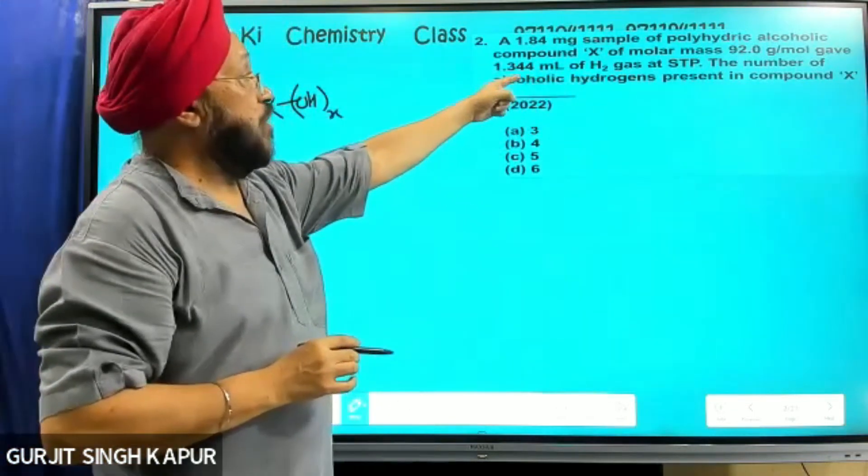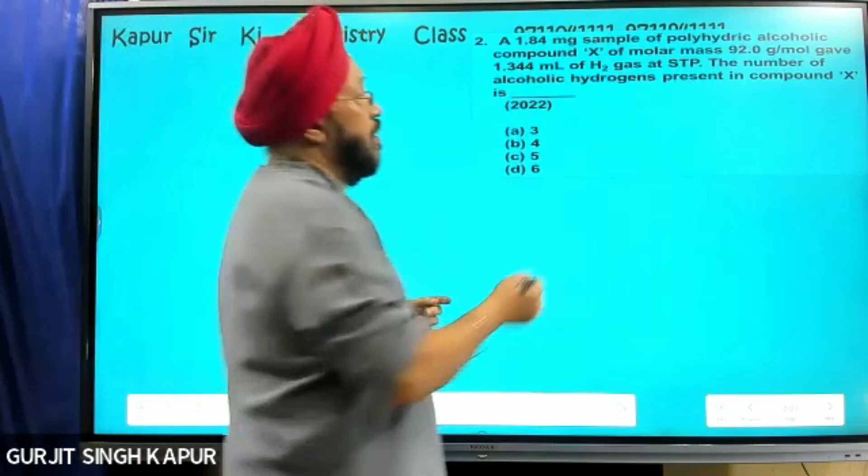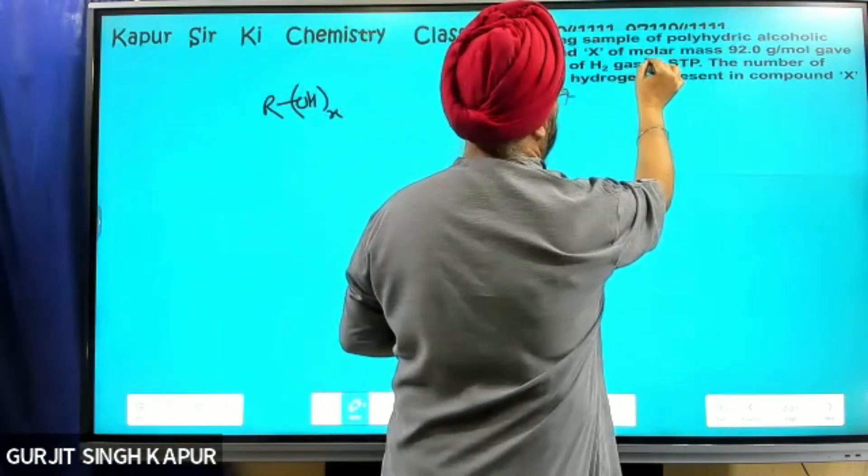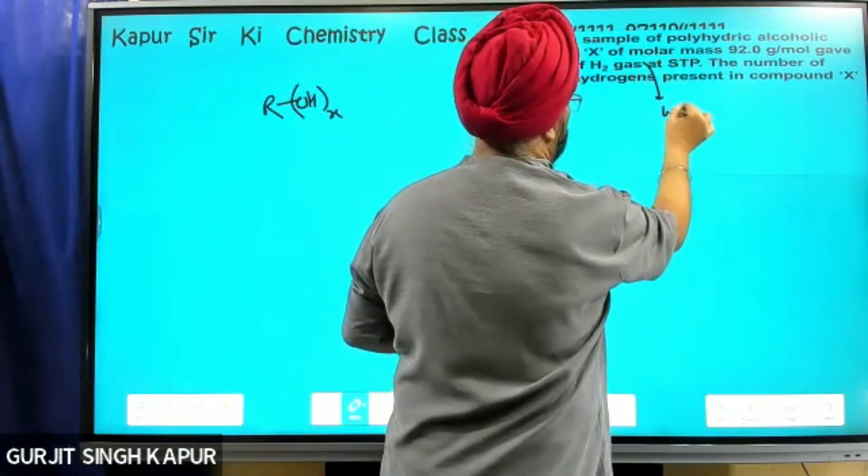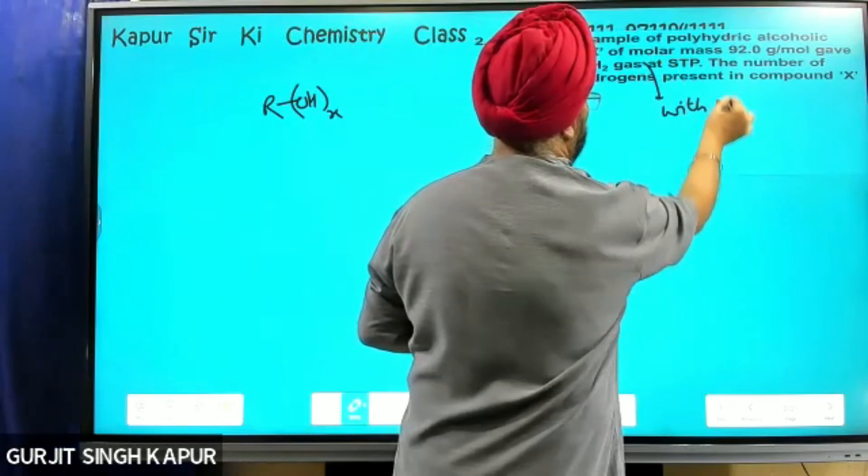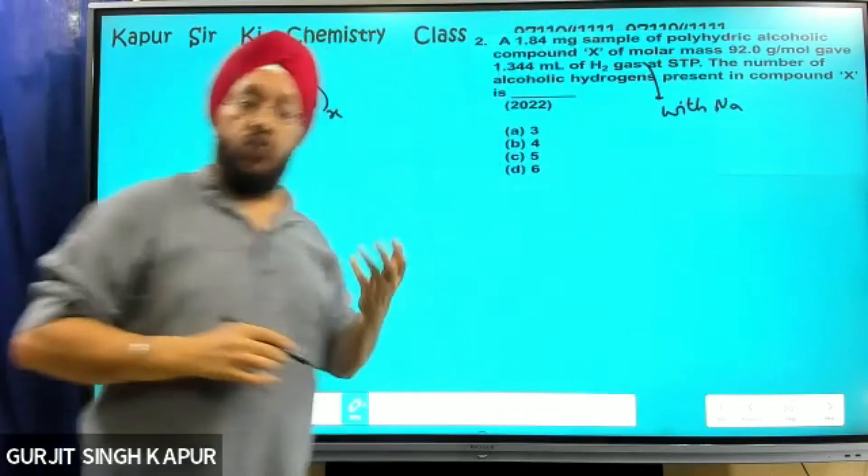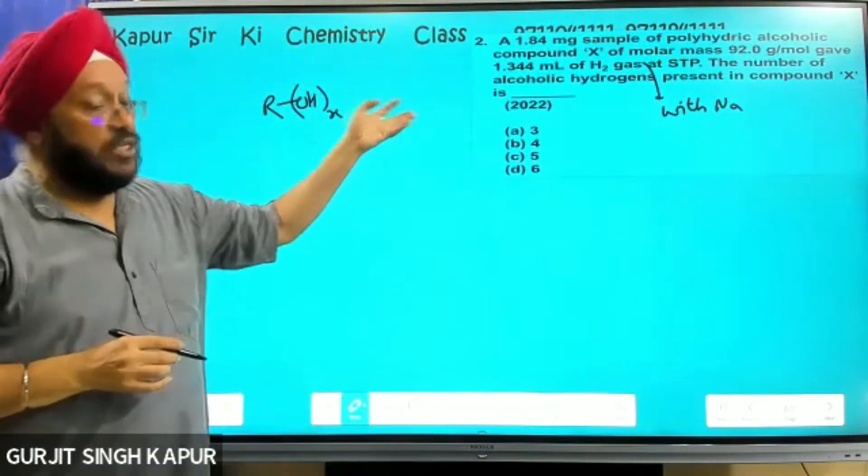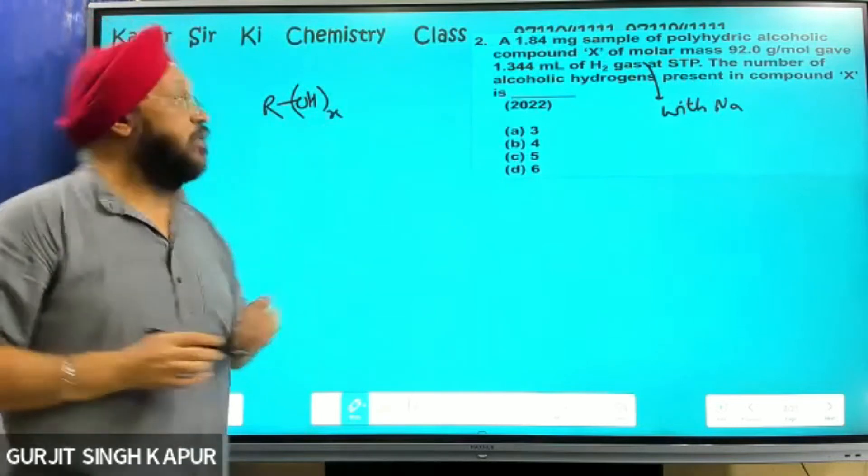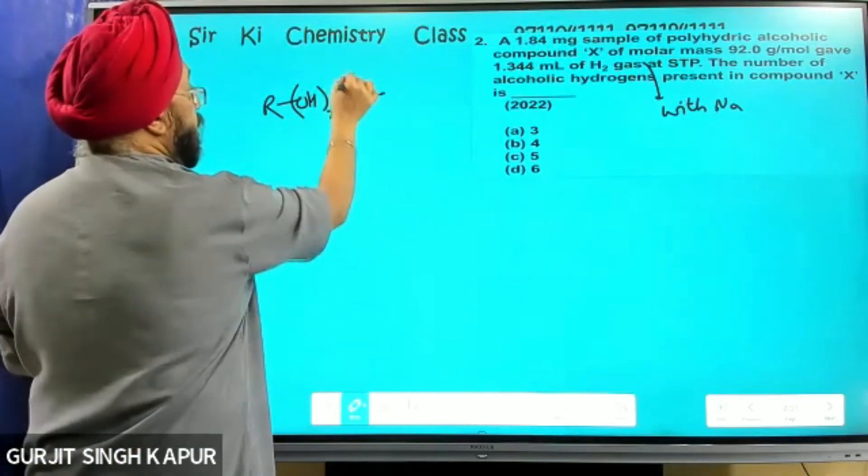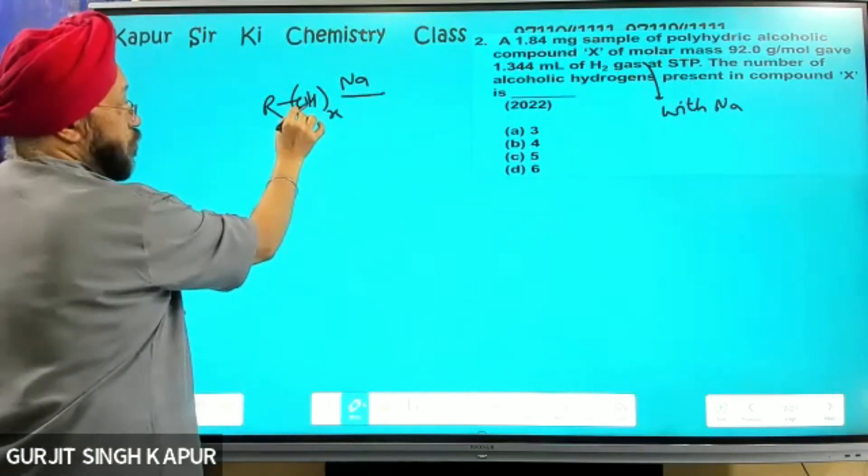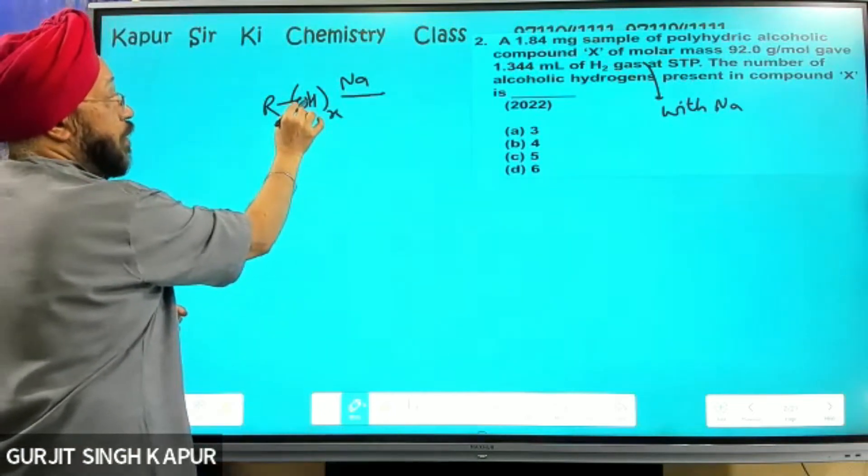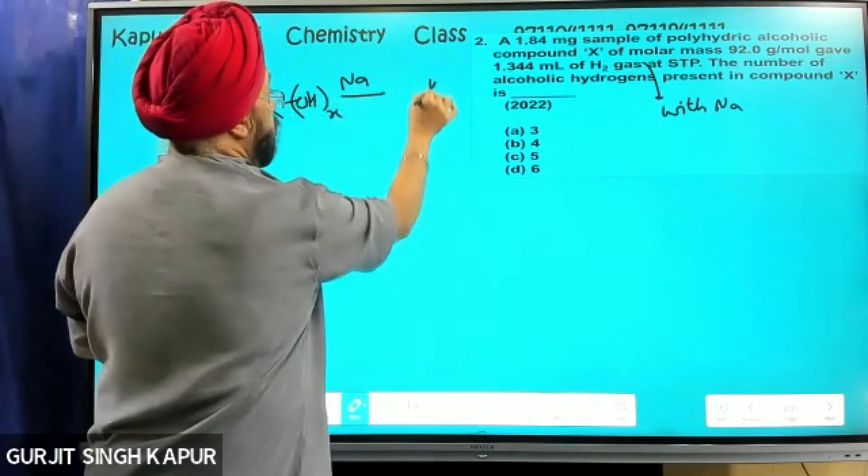That gave 1.34 ml of hydrogen gas with sodium. That means when reacted with sodium metal, it releases hydrogen gas from alcohol. So sodium reaction - this H of alcohol is liberated as hydrogen gas.